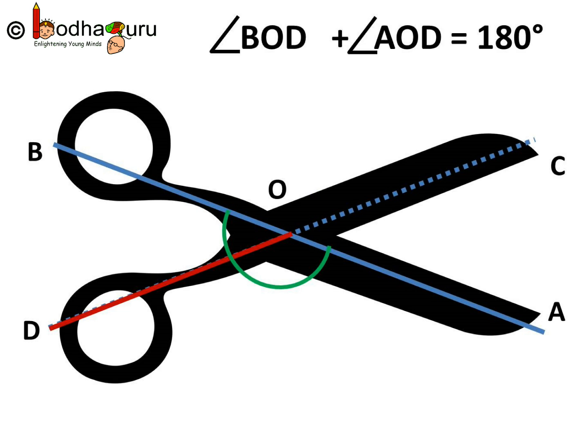Same way, ray OD stands on the line AB and angle BOD plus angle AOD is equal to 180 degrees because they form a linear pair.